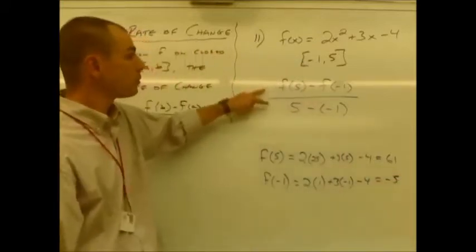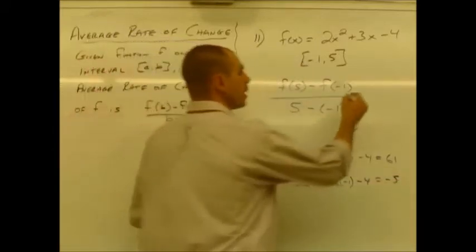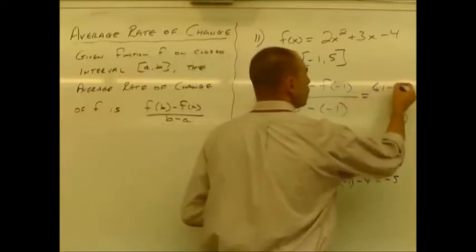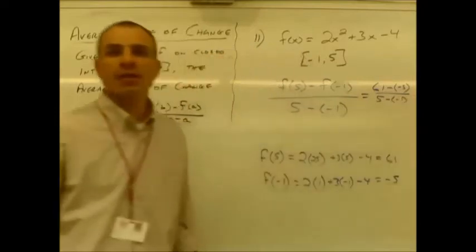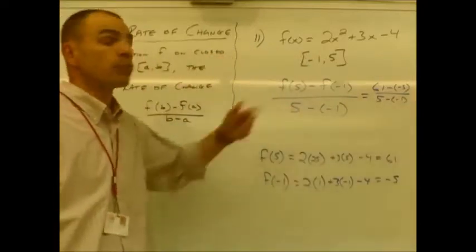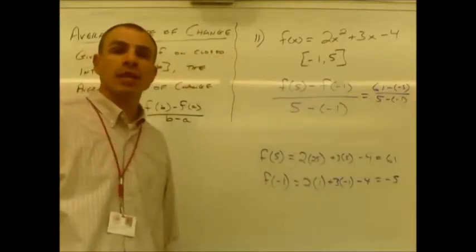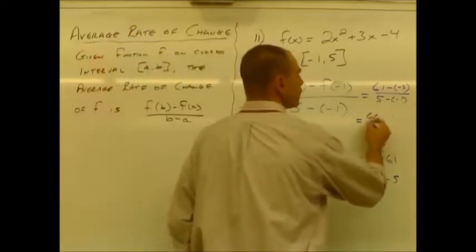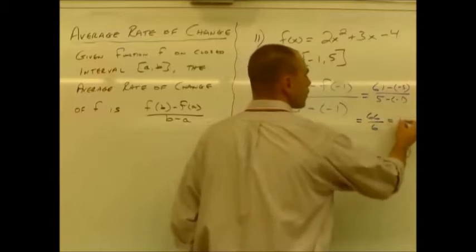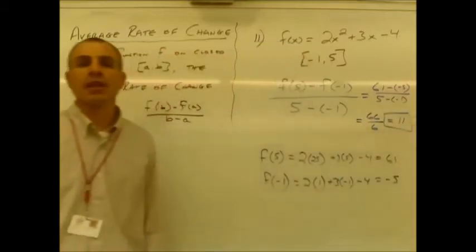So now we can go back up to our average rate of change. And we've got 61 minus negative 5 over 5 minus negative 1. In our numerator and in our denominator, we have a double negative. So we'll be adding in both cases. 61 plus 5 is 66. Denominator is 6, which means our final answer is 11.